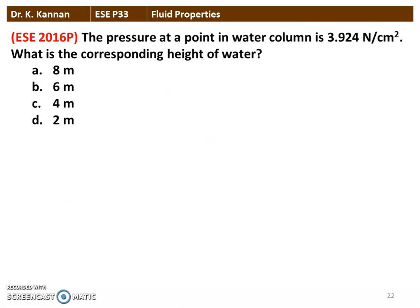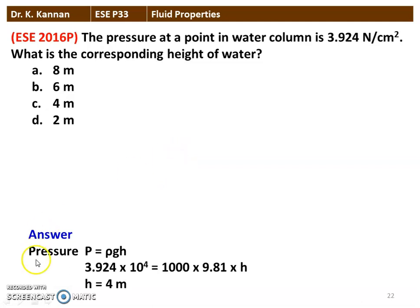The next question is from the 2016 question paper. The pressure at a point in a water column is 3.924 N/cm². What is the corresponding height of the water column in meters? Using P = ρgH: 3.924 × 10⁴ N/m² = 1000 × 9.81 × H, so H = 4 meters. The correct answer is 4 meters.